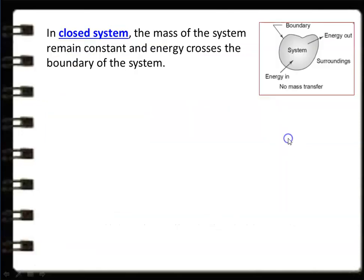The first type is the closed system. Looking at the diagram: there is no mass transfer across the boundary, but energy can enter and leave. That means energy crosses the boundary and the mass of the system remains constant. So within the system, we have a certain quantity of substance that remains the same and only energy crosses — entering into or leaving the system. In a closed system, mass remains constant and only energy crosses the boundary.